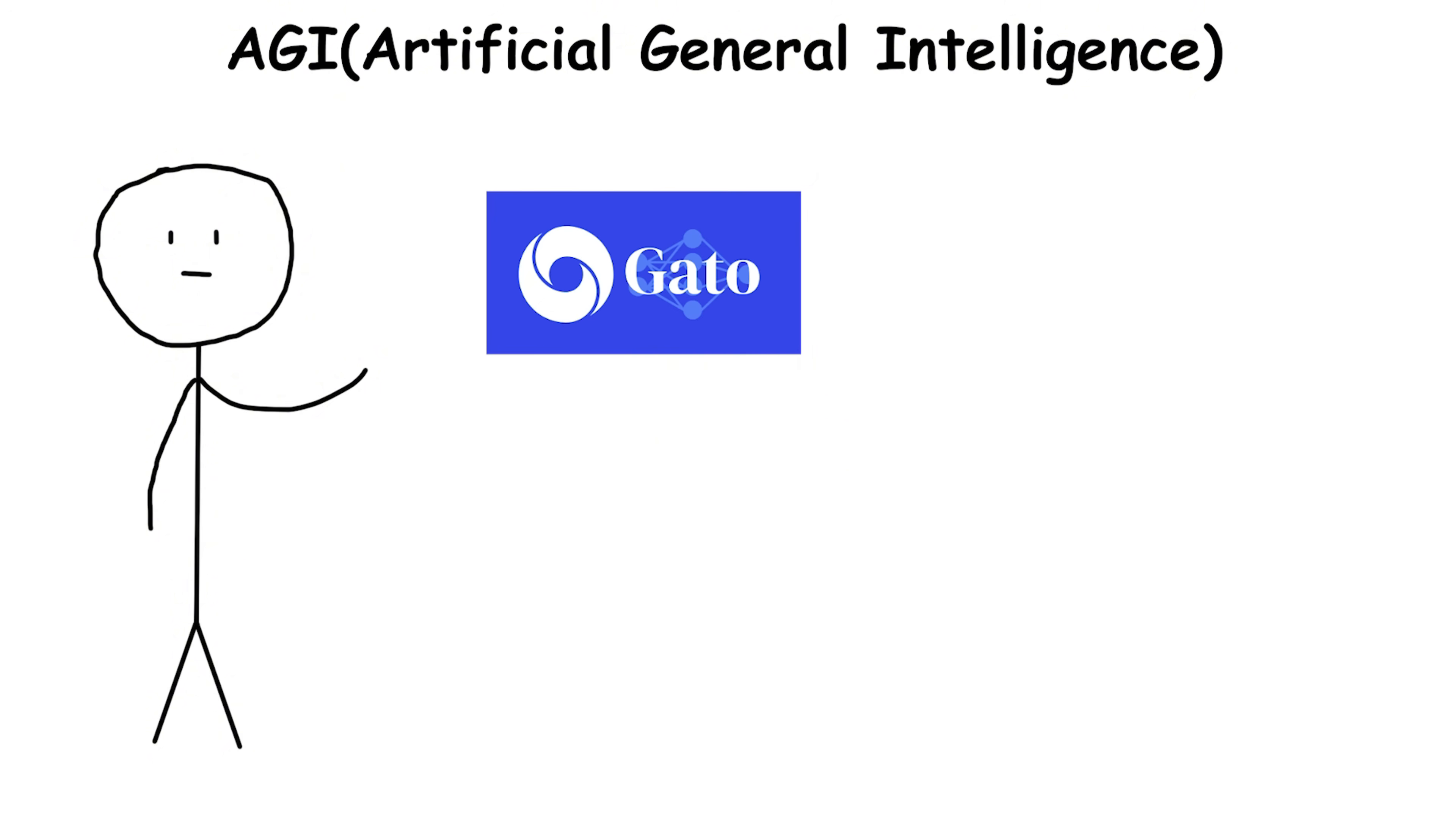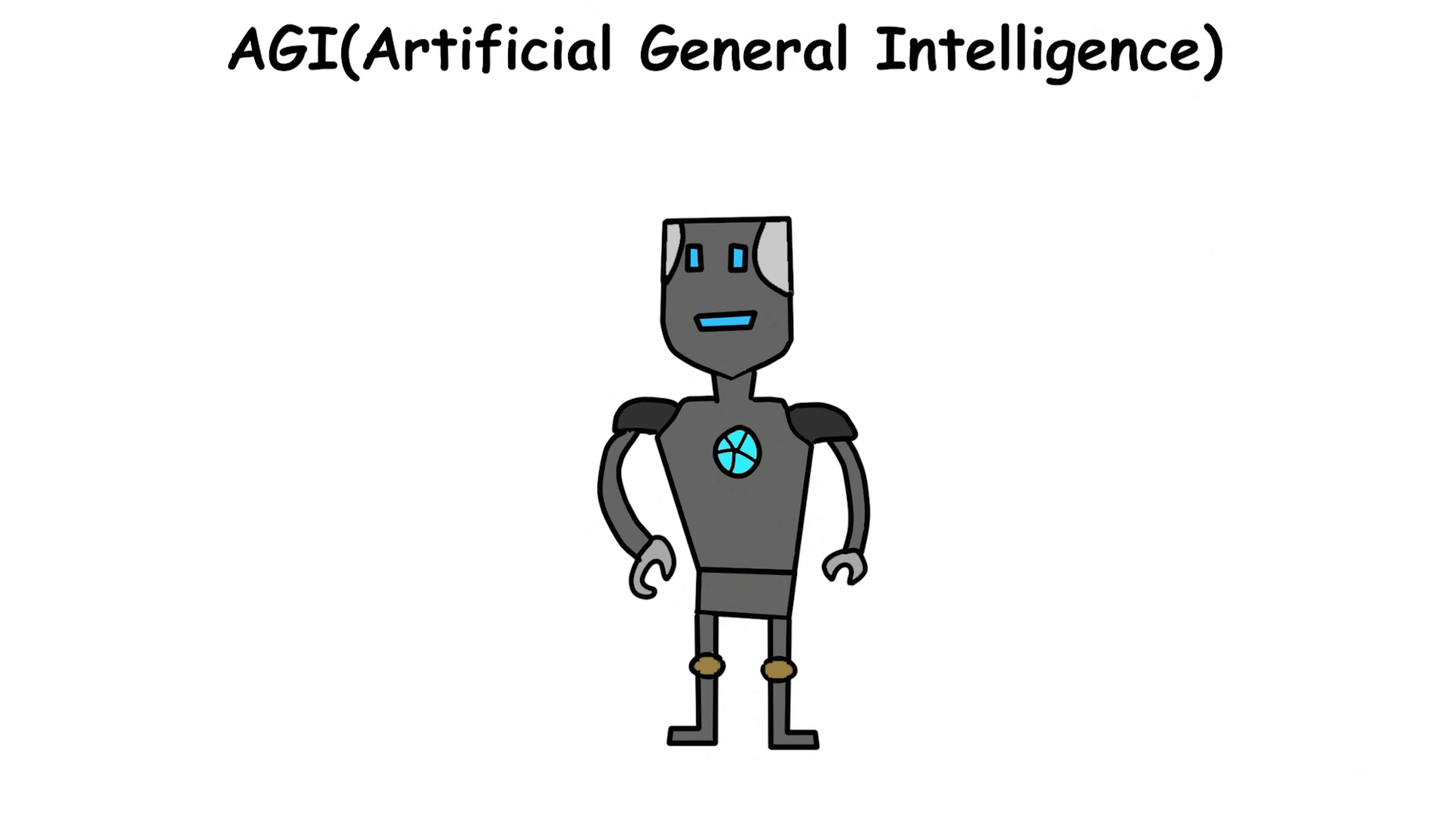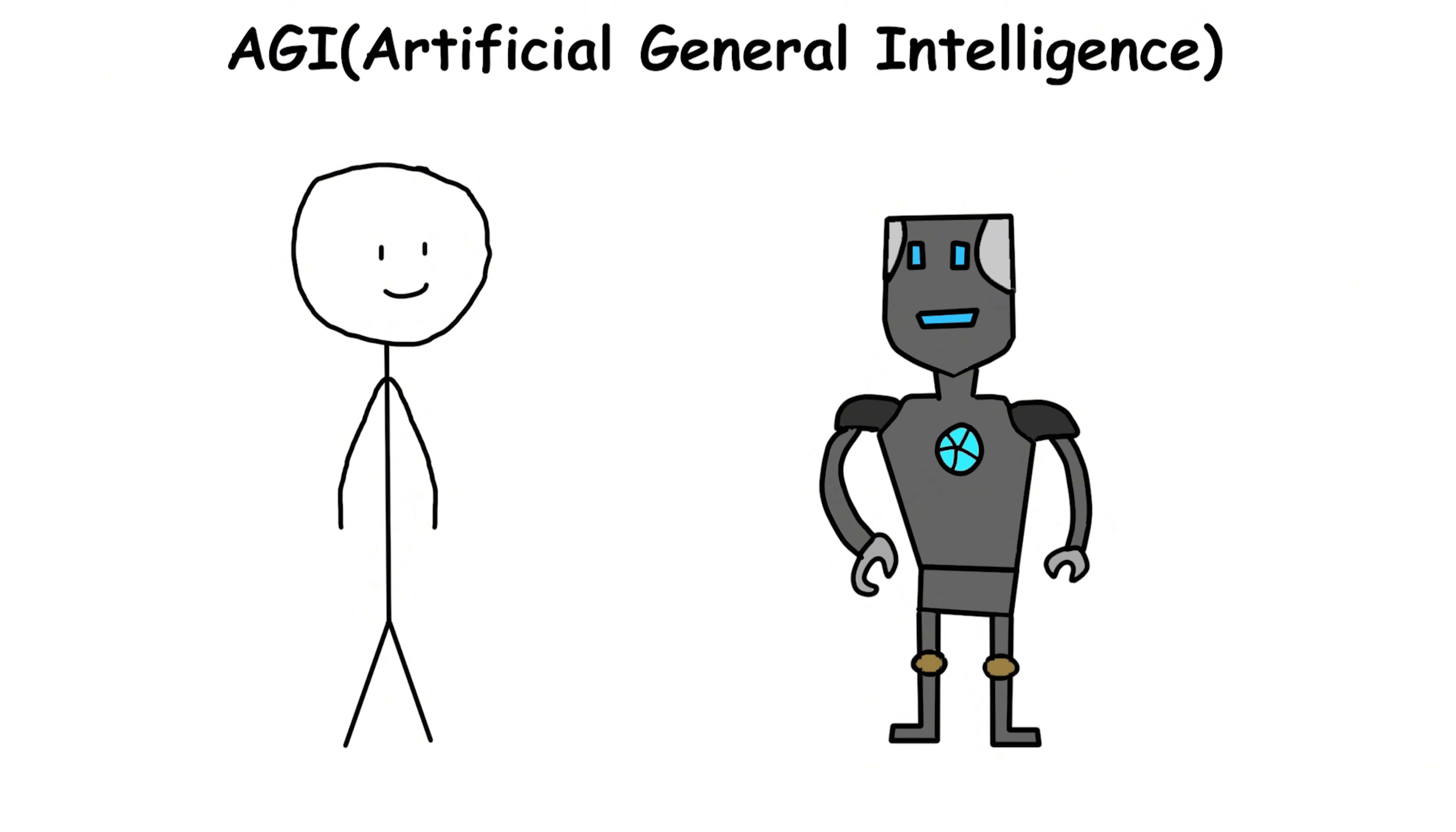Projects like DeepMind's Gato attempt to move toward AGI by training a single model on dozens of tasks, from captioning images to playing Atari games, showing early signs of multi-skill learning. AGI research also explores architectures combining perception, planning, memory, and logic, mimicking the layered processing of the human brain.